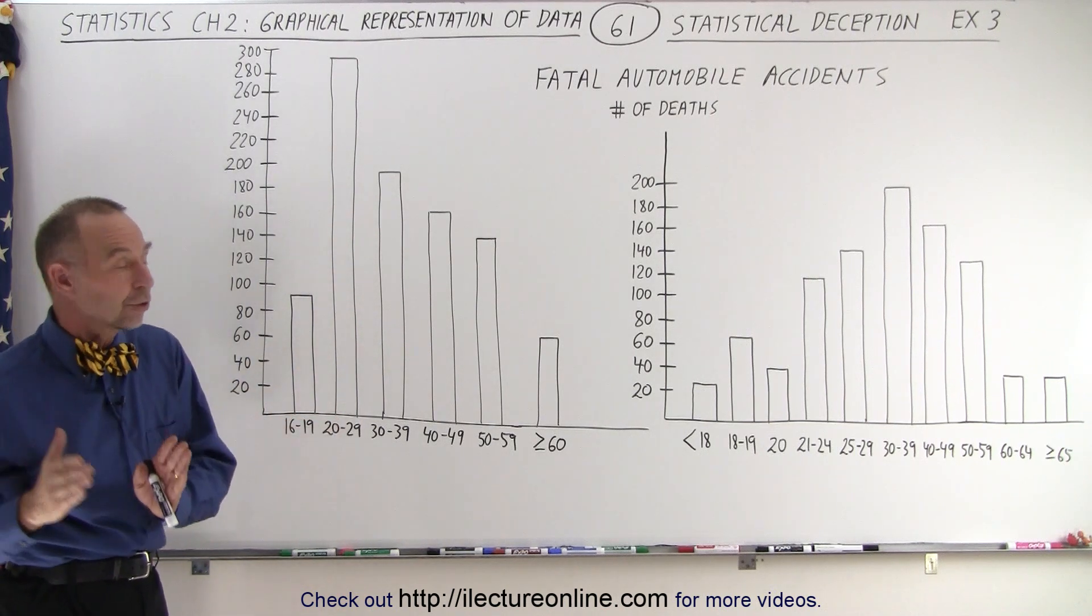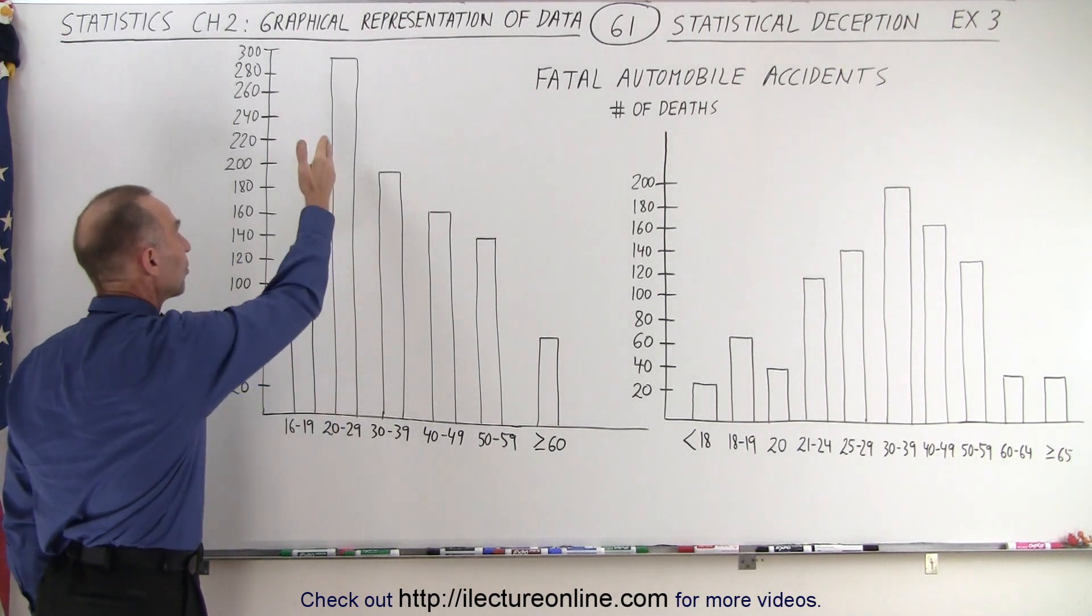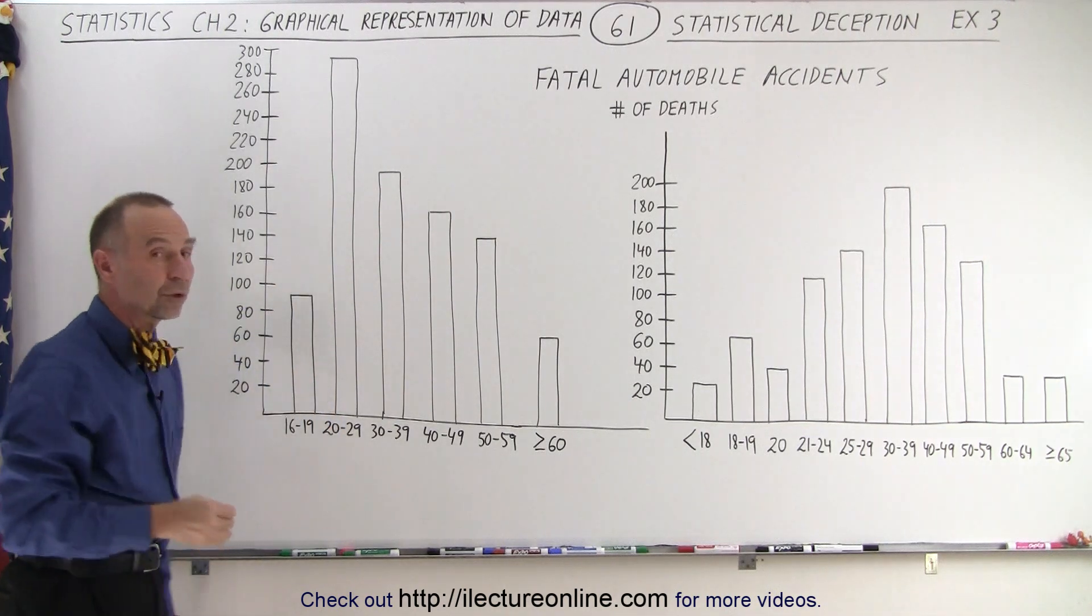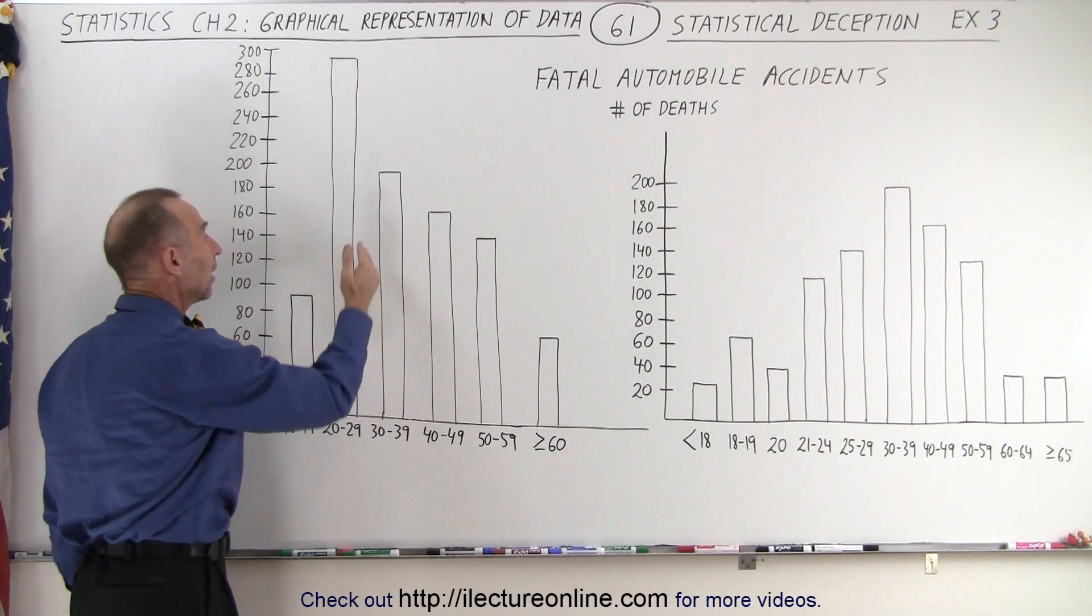But if we strictly go by age, it certainly looks like drivers that are between 20 and 29 cause a lot more car fatalities than drivers between 30 and 39.